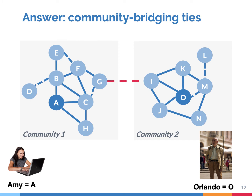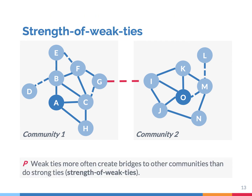The answer to this puzzle is to be found in community bridging ties — ties between people of different communities. The members of two different communities can reach each other in just a few steps because of a single community bridging tie. According to Granovetter, such links between different communities are often weak ties, not strong ties. Weak ties provide shortcuts to different communities, and this makes them so important — so strong, in the words of Granovetter. And that's why he speaks about the strength of weak ties.